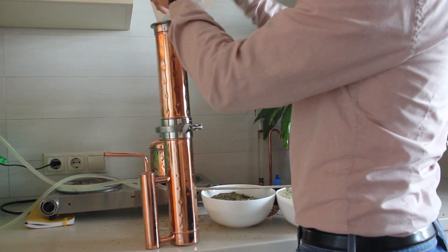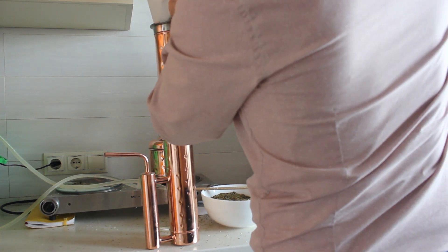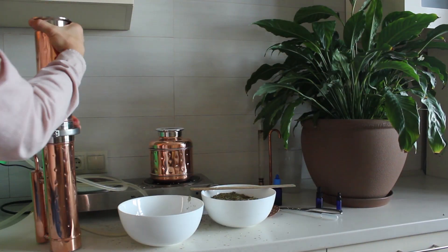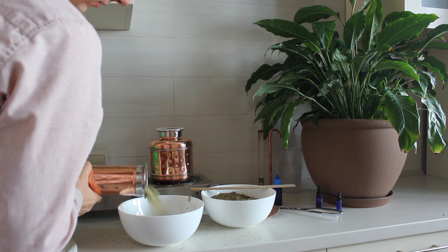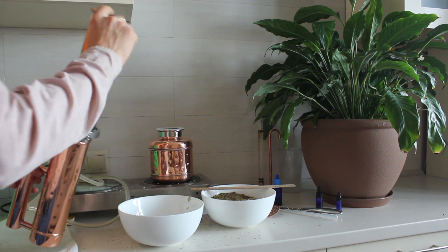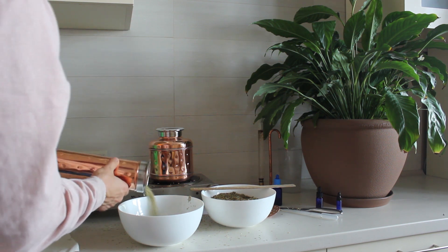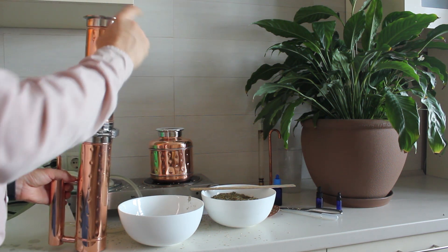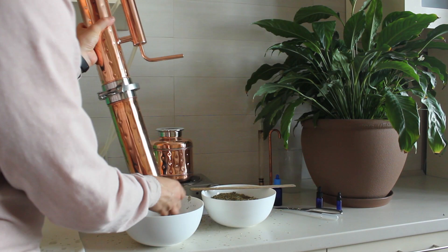Now I continue with the filling of the column. During the distillation the rosemary expands quite heavily so we should leave more space for extension. Now I leave approximately five centimeters or more. I close it with a sieve and put it on the pot.